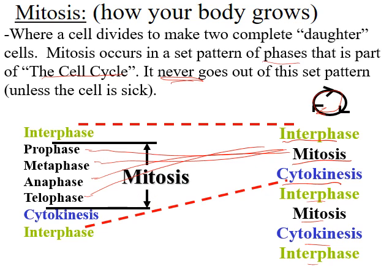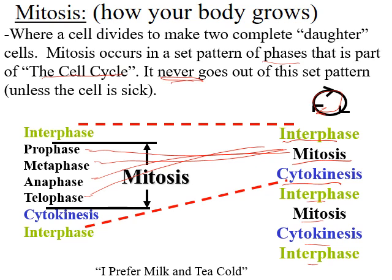That's mitosis. Interphase and cytokinesis occur within the cell cycle, but they are not part of mitosis. Mitosis is only prophase, metaphase, anaphase, and telophase. We're going to learn a mnemonic to help you remember: it's 'I prefer milk and tea cold.'